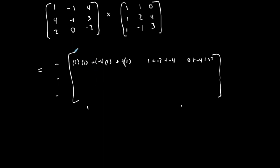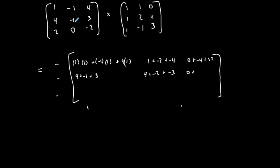Row two, column one: four times one is four, plus negative one times one is negative one, plus three times one is three. Row two, column two: four times one is four, plus negative one times two is negative two, plus three times negative one is negative three. Row two, column three: four times zero is zero, plus negative one times four is negative four, plus three times three is nine.